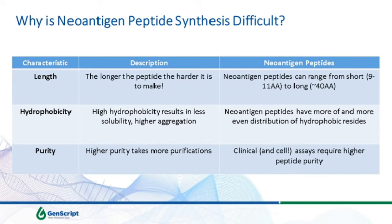Hydrophobicity is a huge challenge. Many neoantigen peptides have many hydrophobic residues that are evenly distributed, leading to aggregation and difficulties with solubility. Purity is critical because many of these assays are very sensitive—you want to measure an immune response, but not one due to a contaminant or process impurity. All these factors together make peptide synthesis difficult.